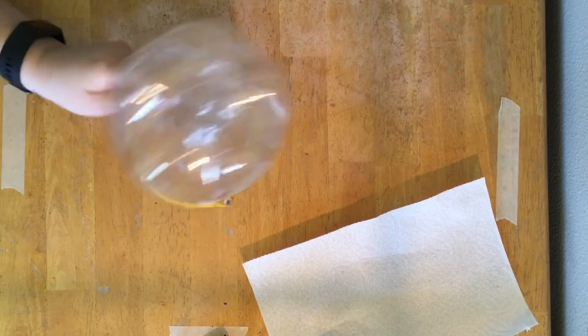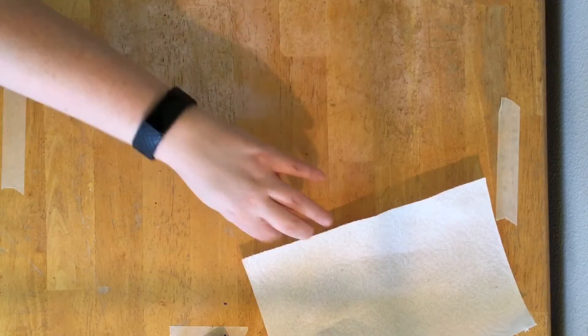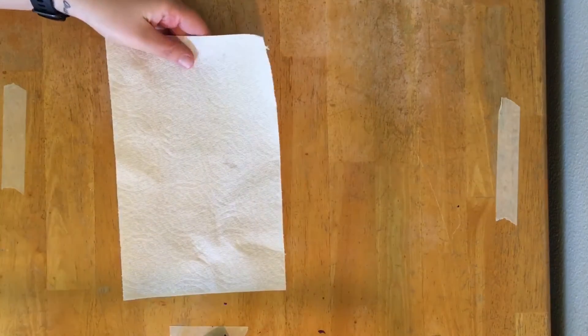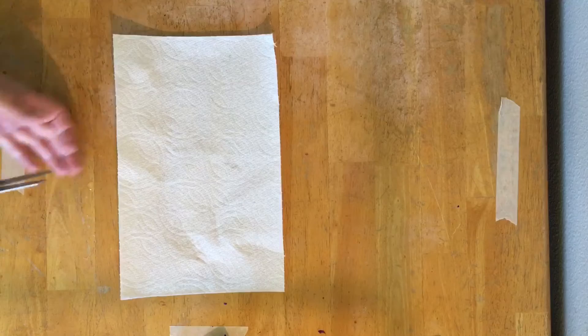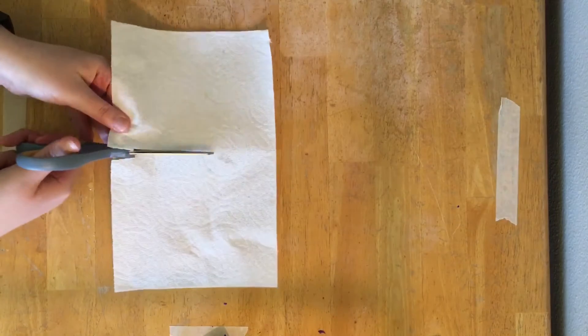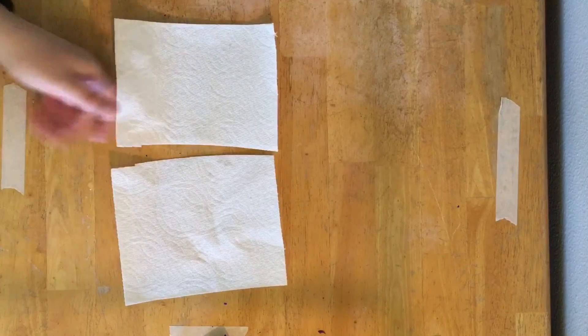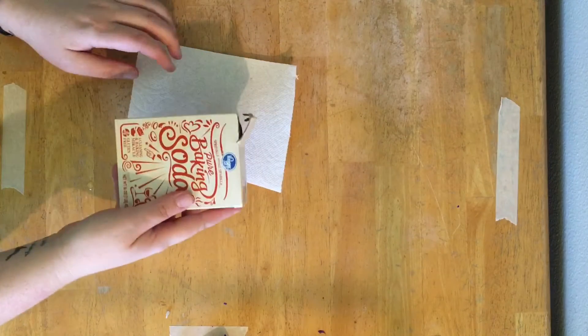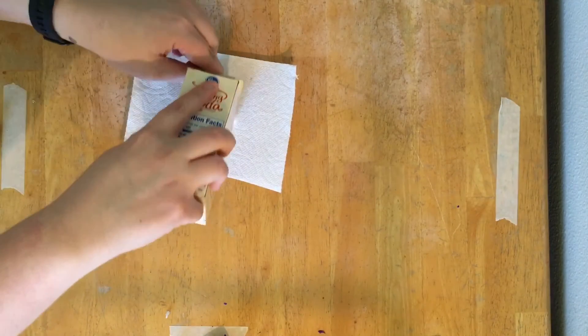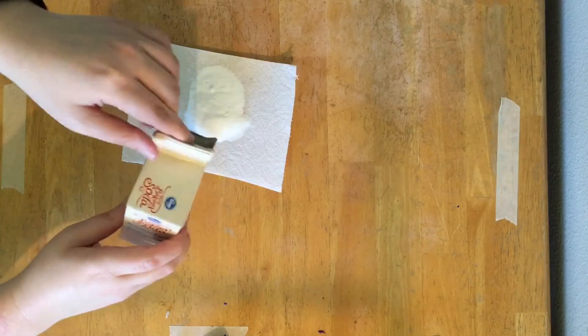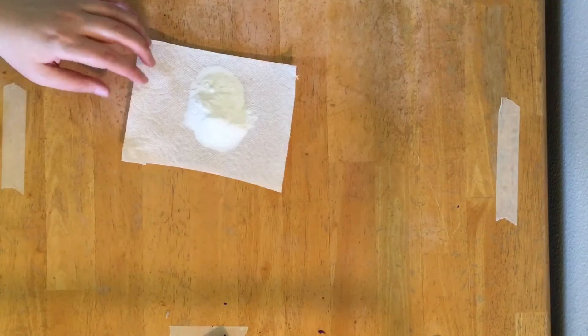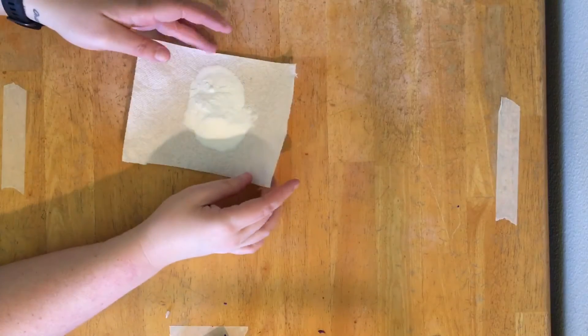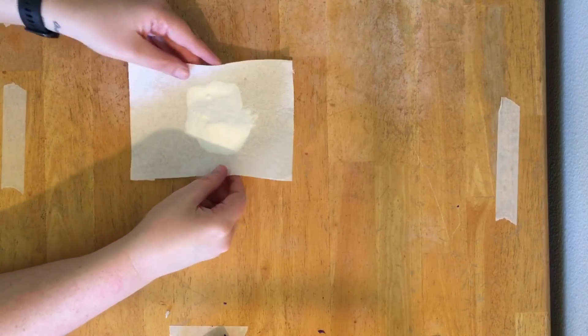So next thing we're going to do is make our packet of fuel. So I have a small paper towel. I'm going to cut that in half and now I'm going to put in a good amount of baking soda, just regular old baking soda. You want to make sure you have quite a bit because that's what's going to make our rocket explode and we're going to fold it up.